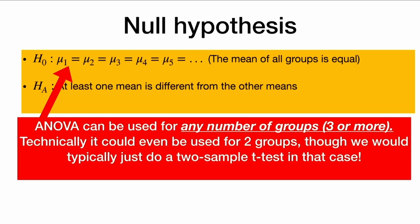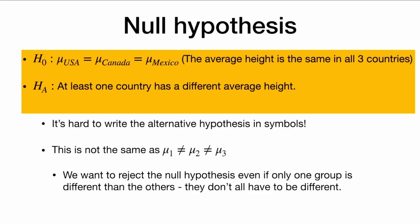ANOVA can be used for any number of groups, three or more. Technically, ANOVA could even be used for two groups, though in that case we would typically just do a two-sample t-test instead. So here is the null and alternative hypothesis for our specific problem: the mean height in the U.S. is equal to the mean height in Canada, which is equal to the mean height in Mexico, and the alternative hypothesis is that at least one country has a different average height than the others.